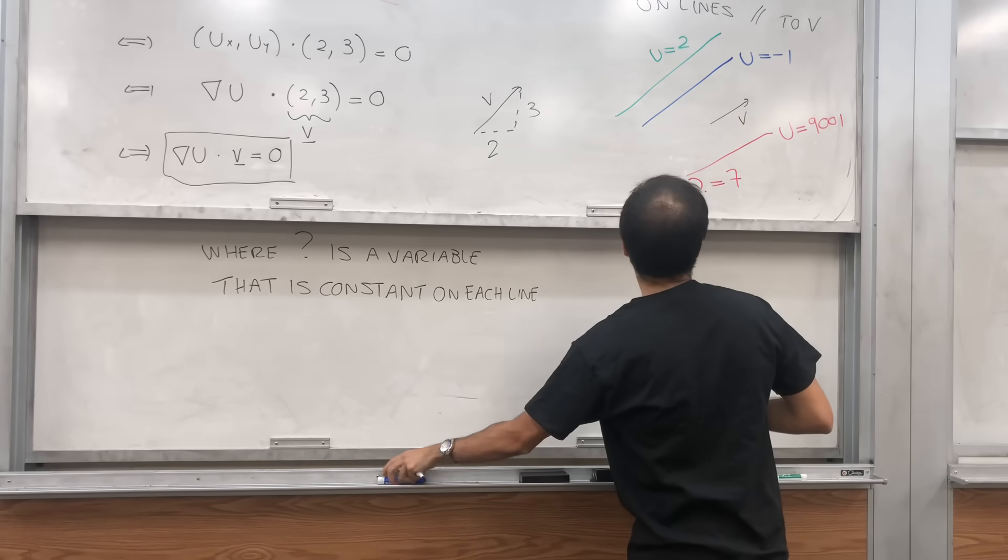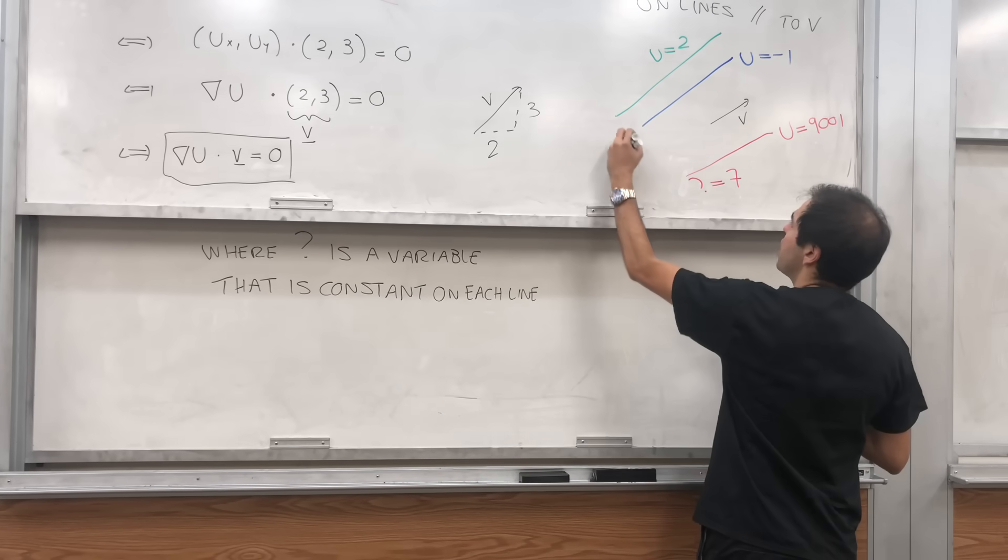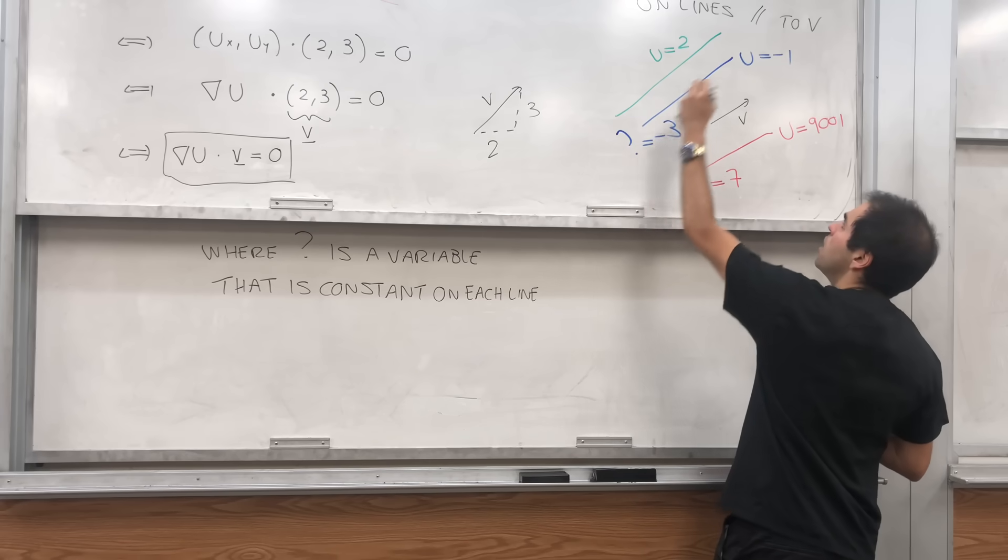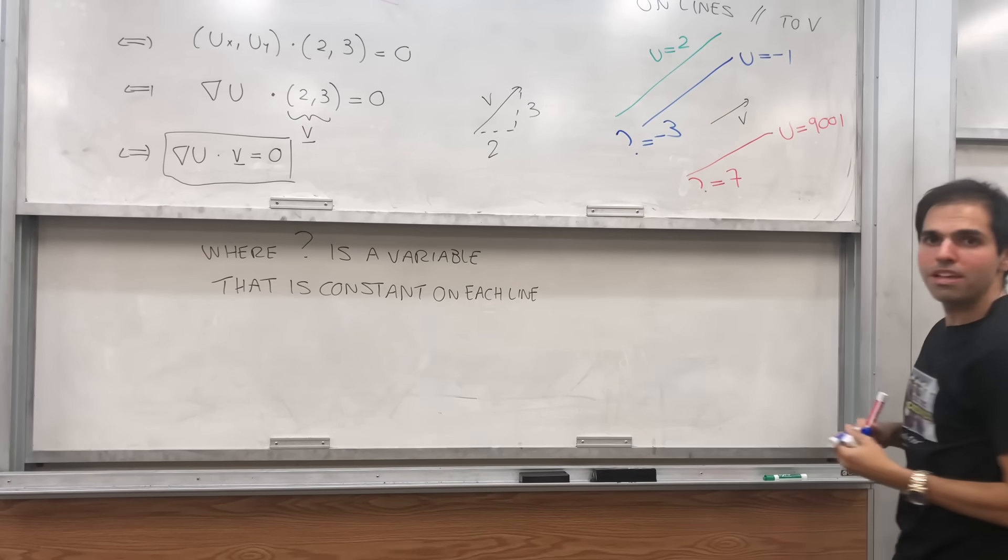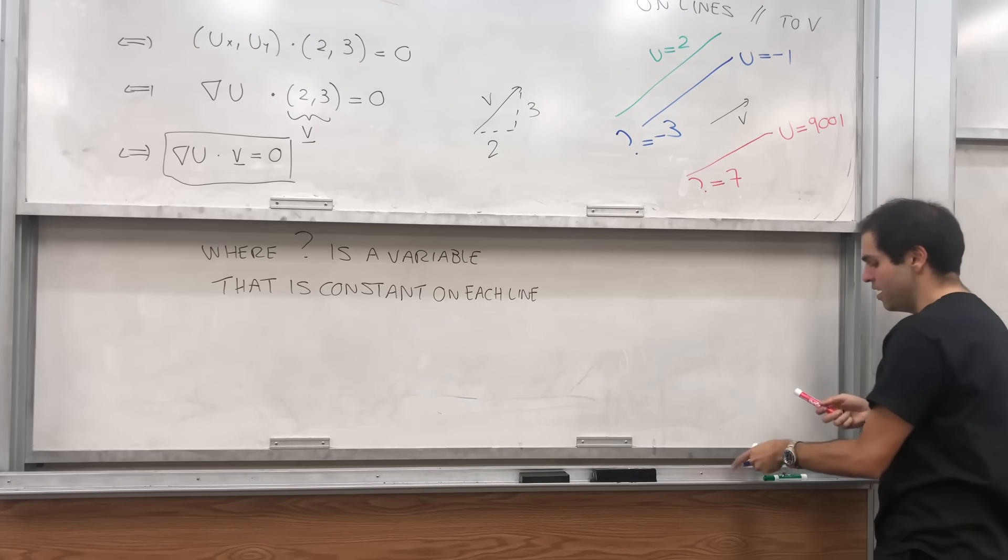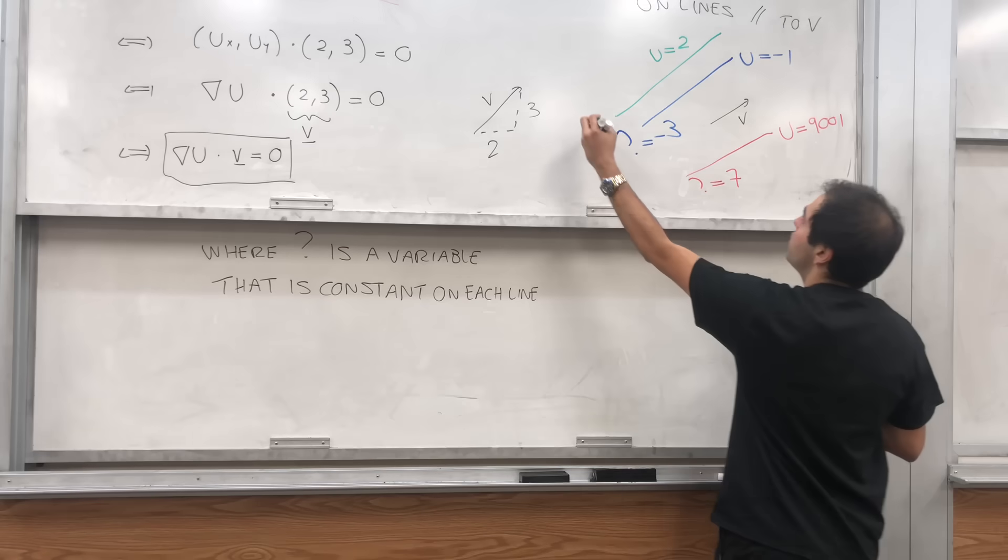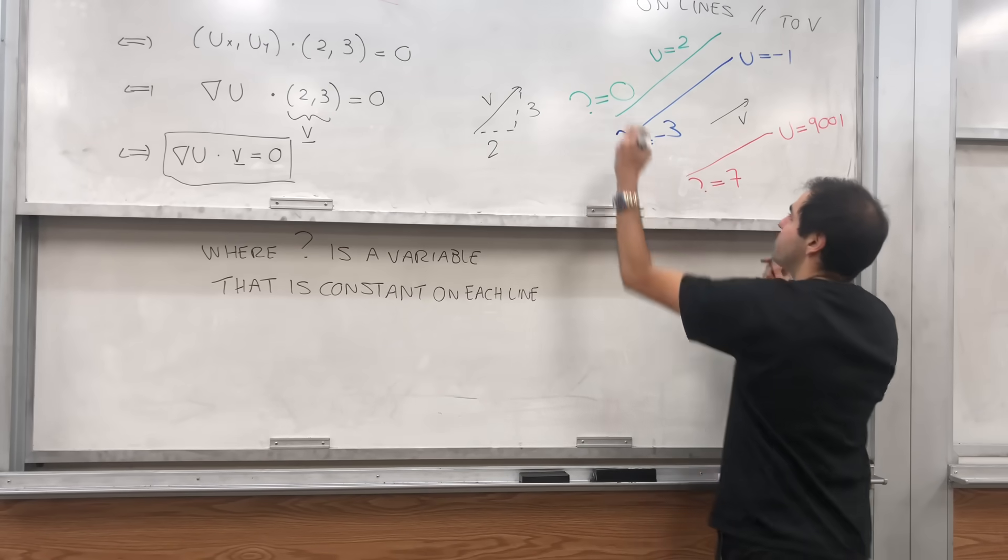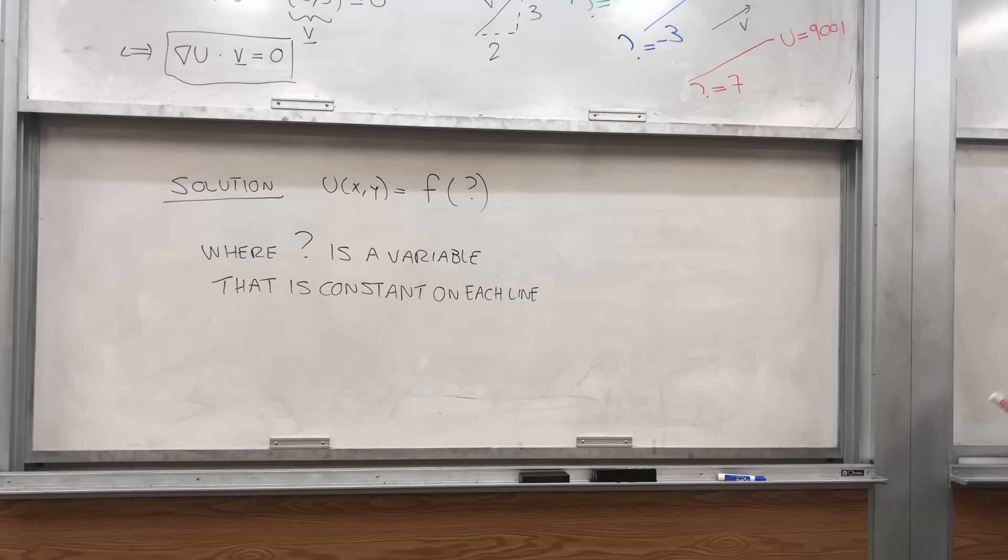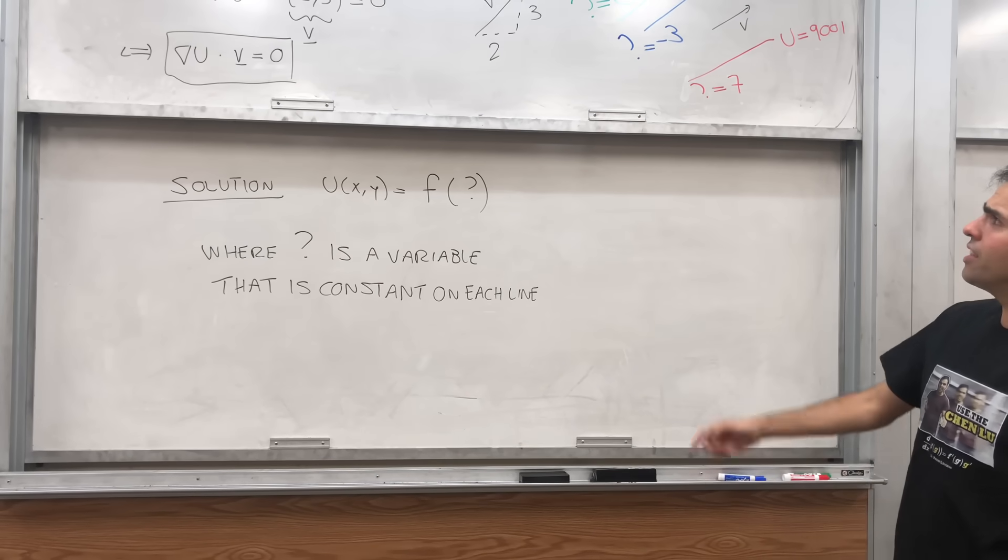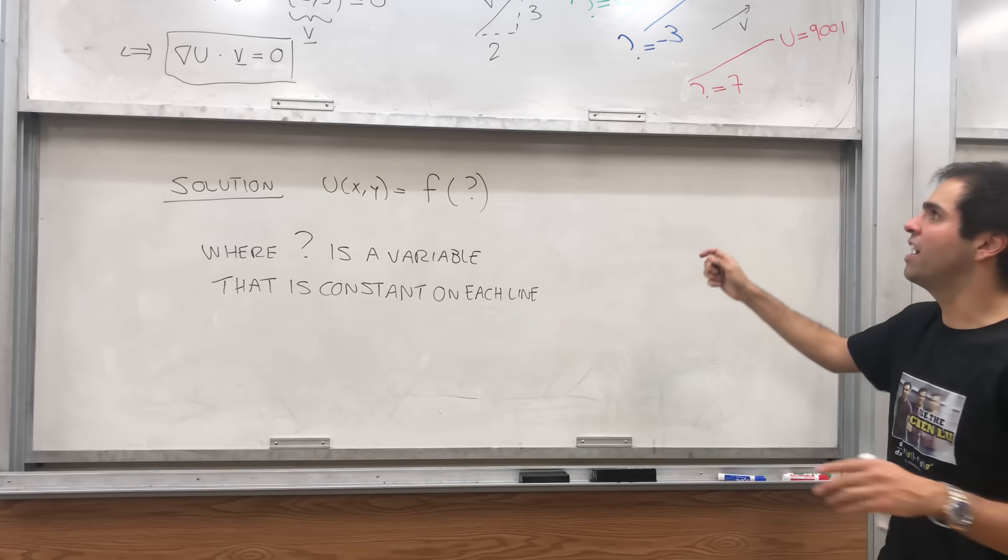Or here, question mark might be negative 3. And when you say question mark negative 3, it means this line, and then you just specify any value on this line. Or here, question mark might be 0. So in other words, all we need to do is find a constant that's constant on each line. So find this variable that is constant on each line. And this is actually not too hard to find, because we know what's the characteristic of the line. We know that it's directed by this vector v.